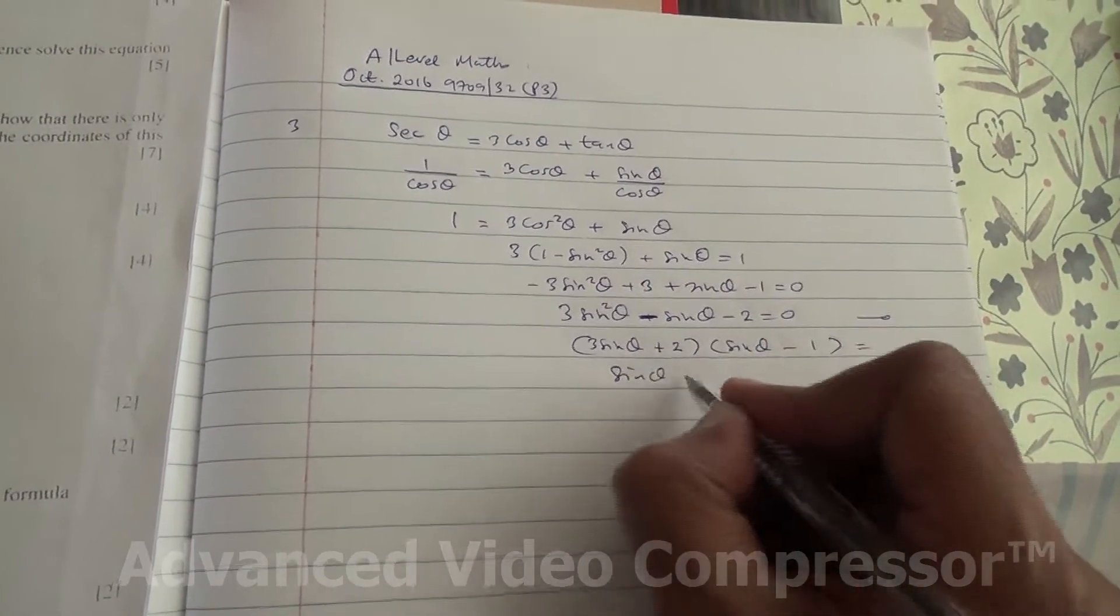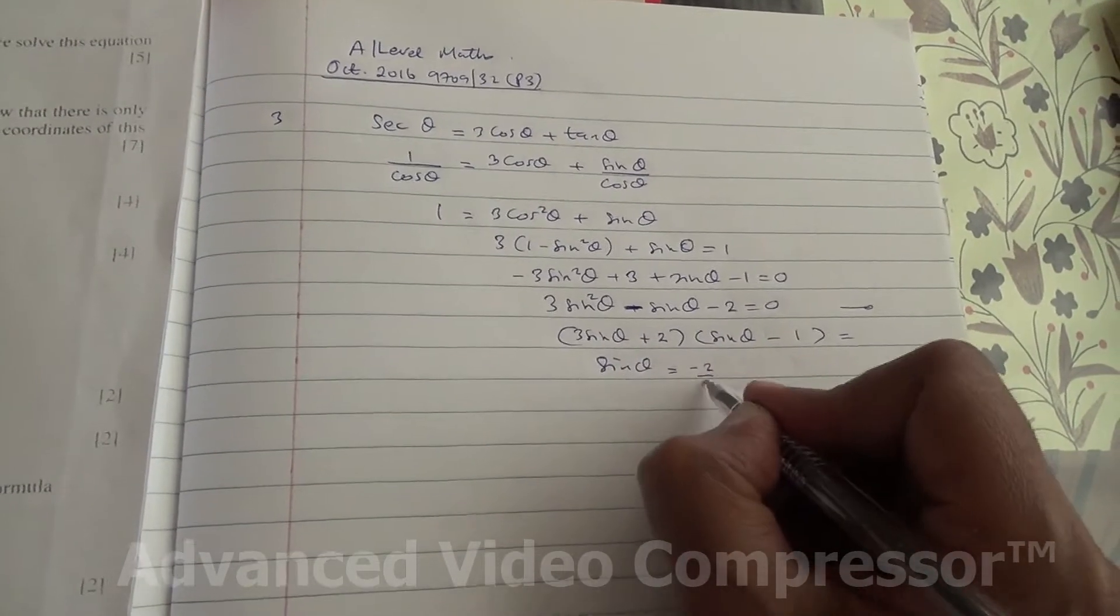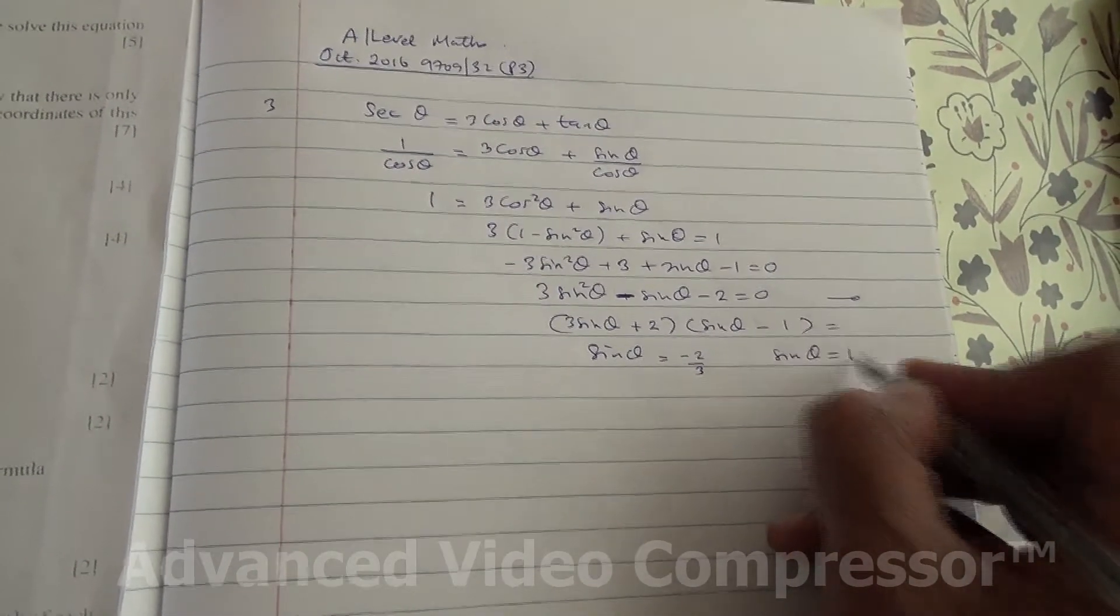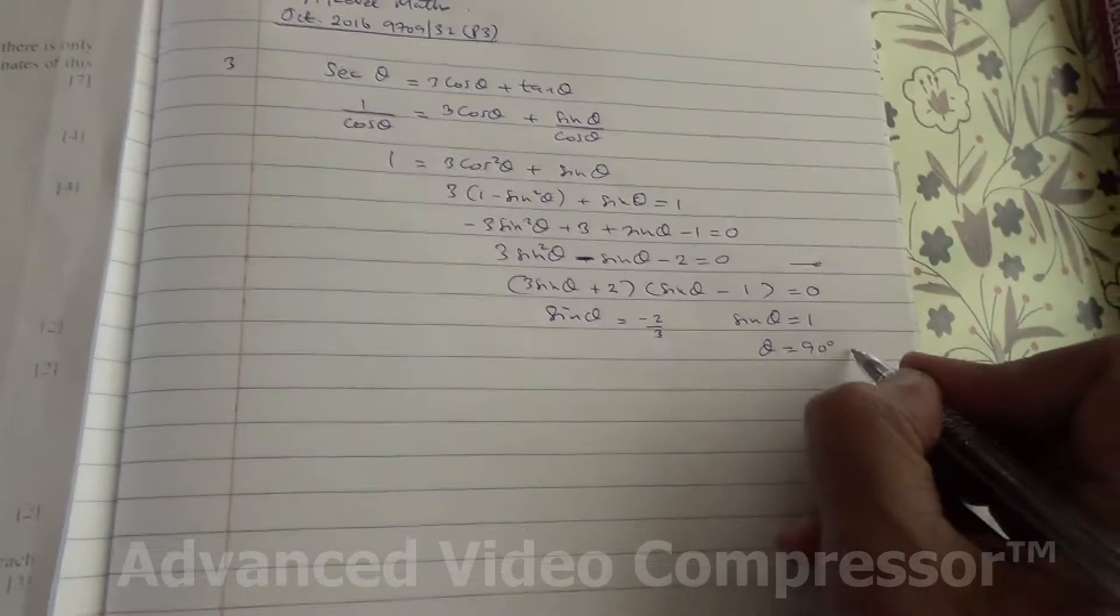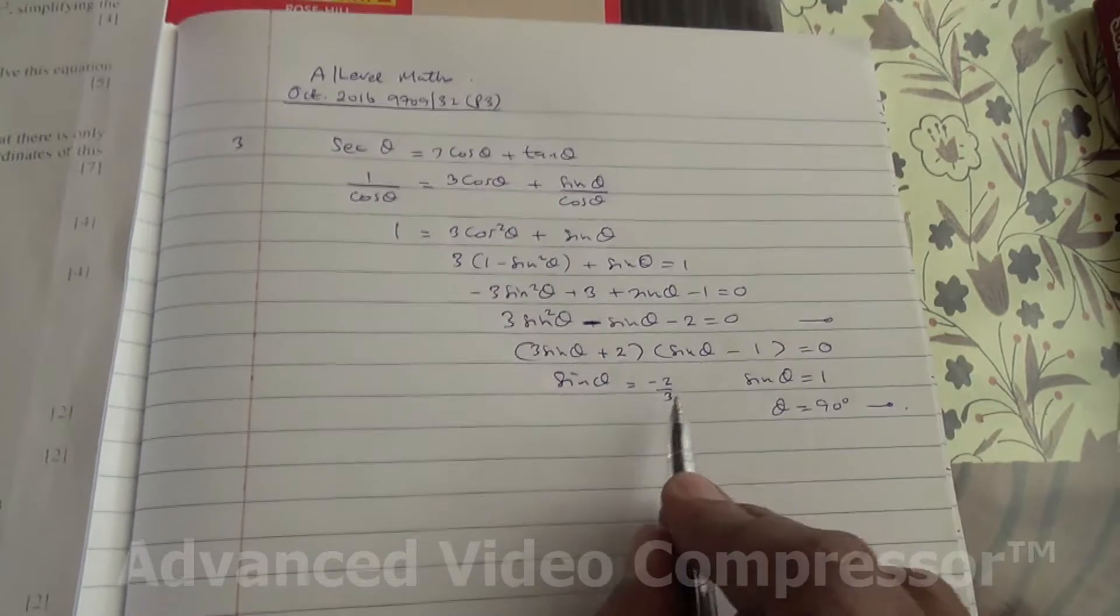So sin of theta then is equal to minus 2 over 3. Sin of theta is equal to 1. So this is going to be equal to 90 degrees, check it out from your calculator.